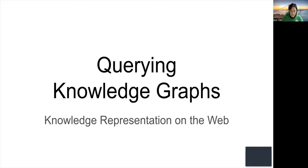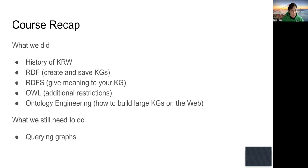Welcome to the fourth lesson of the Knowledge Representation on the Web course. Today we will be looking at querying knowledge graphs. As a recap: we looked at the history of Knowledge Representation on the Web, RDF as a means to create and save knowledge graphs, RDF as a language to add semantics, OWL for additional semantic restrictions, and ontology engineering. Today we cover how to query existing, especially large, knowledge graphs.